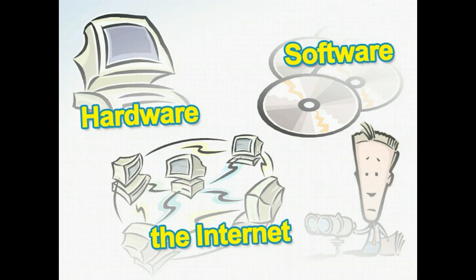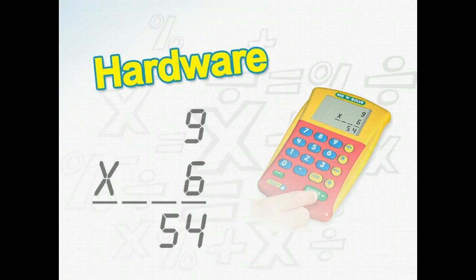Some of the main types of technology you'll come into contact with at school are hardware, software, and the Internet. We're going to look at examples of each of these types of technology. Let's start with hardware, which can be anything from a basic four-function calculator to a digital projector. One of the more obvious examples of hardware is your classroom computer, but there are several other useful tools as well.